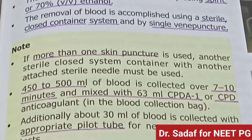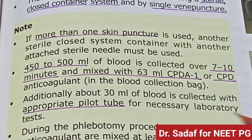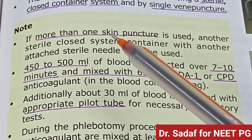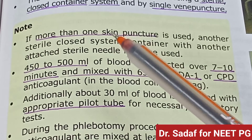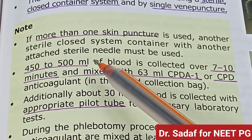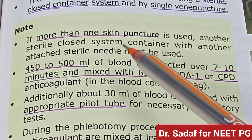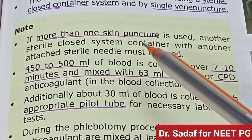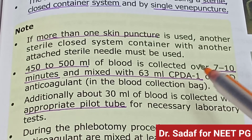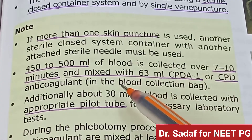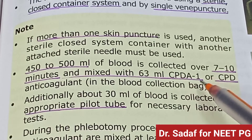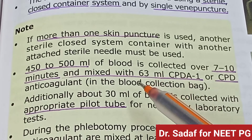The removal of blood is accomplished using a sterile closed container system with a single venipuncture. If more than one skin puncture is required, another sterile closed system container with a new sterile needle must be used. 450 to 500 ml of blood is collected within 7 to 10 minutes.